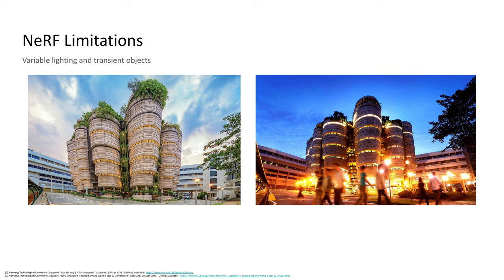The phenomenon of variable lighting can be seen in the following images, where the lighting of the heart is of daytime in the left image and is of nighttime in the right image. The phenomenon of transient objects can be seen where, in the right image, a crowd is present, and in the left image, there is no crowd present.